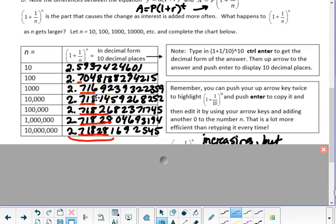Starting with 100,000, the fourth decimal place stays at a 2. With 1,000,000, the fifth decimal place stays at an 8. And what we're going to see is the bigger this number gets, the more decimal places just stay the same.